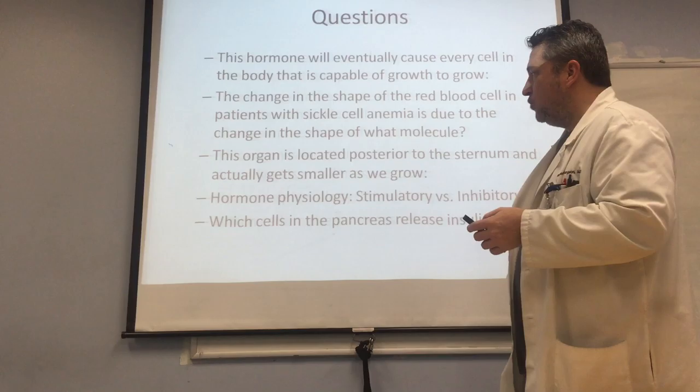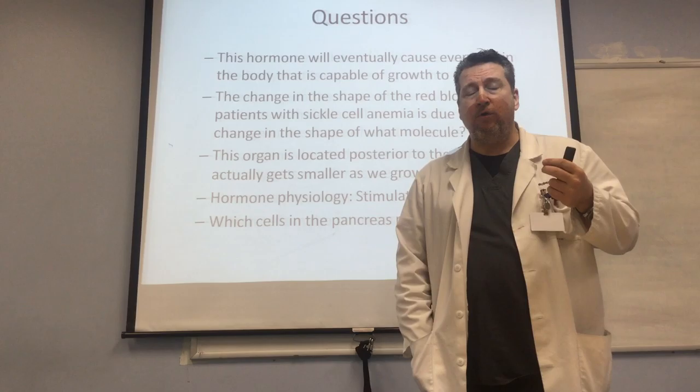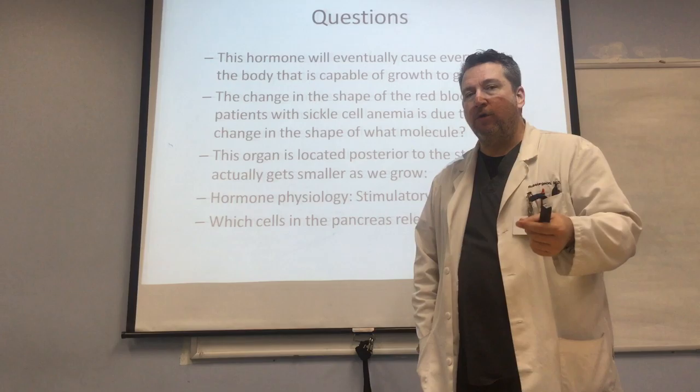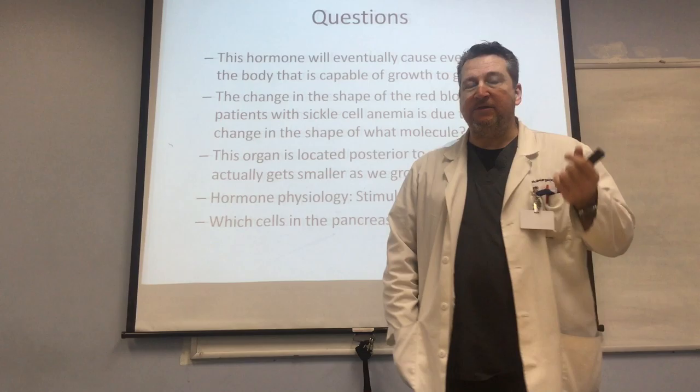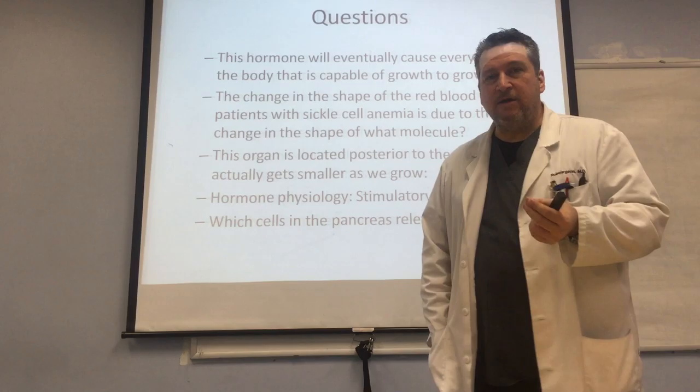In the physiology of hormones, we talked about stimulatory hormones and inhibitory hormones. A stimulatory hormone specifically tells a tissue or cell to do something, whereas inhibitory hormones specifically tell that tissue or cell not to do something. Which cells in the pancreas release insulin? It is the beta cells that release the insulin, and it's the alpha cells that release the glucagon.